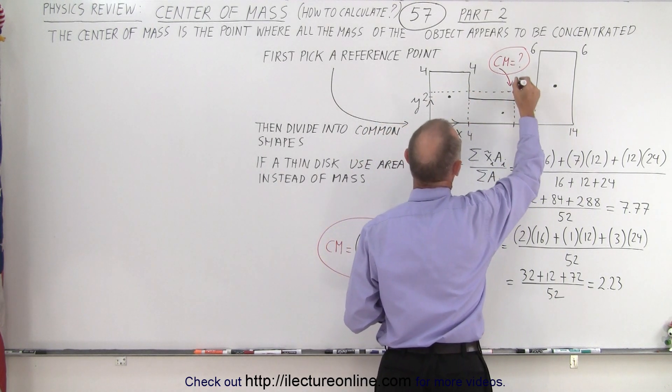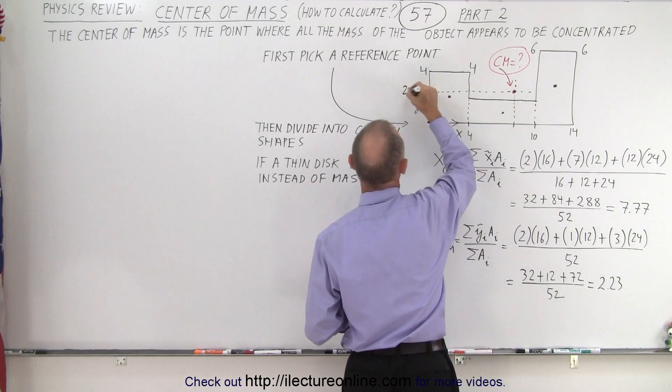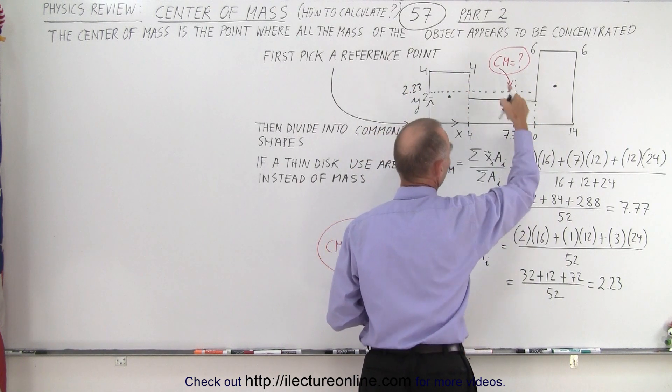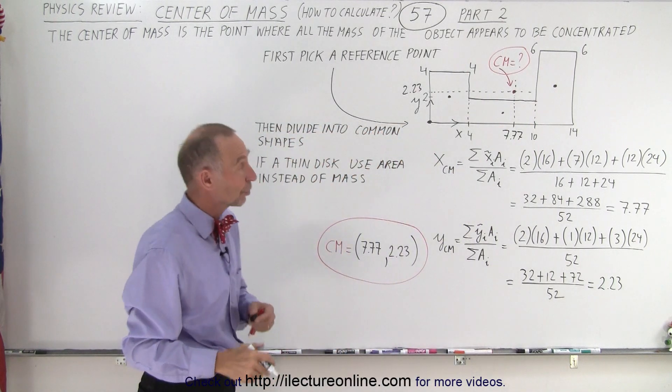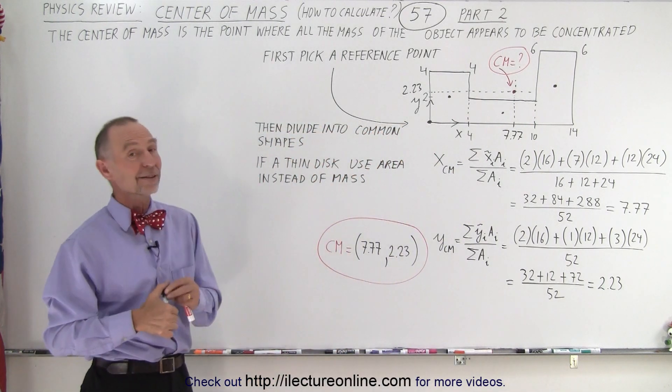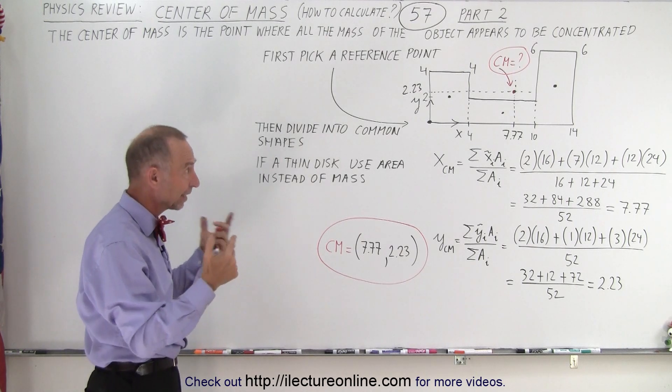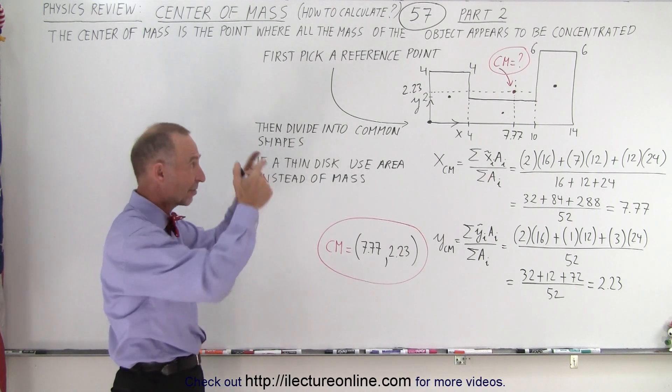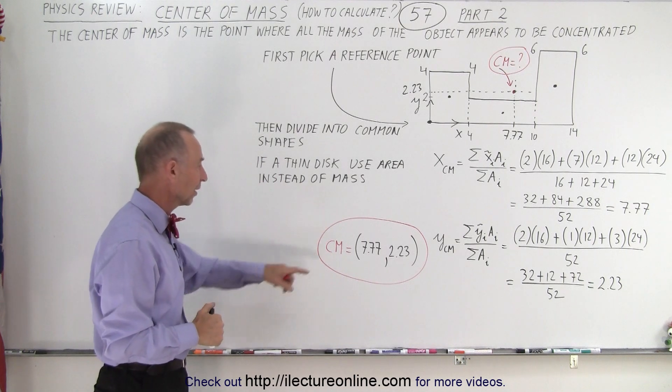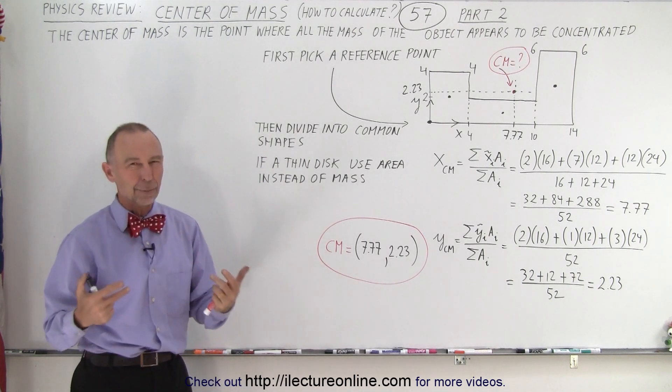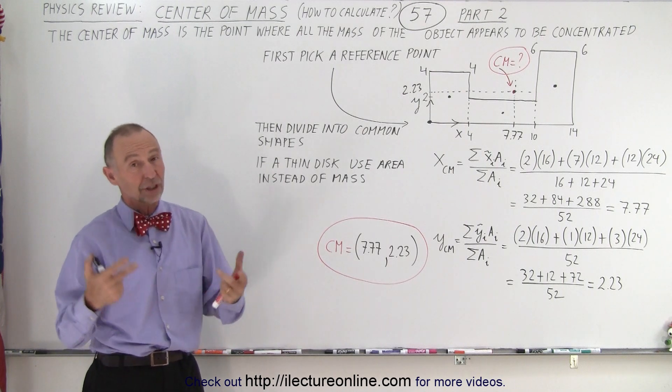And where those two lines cross, that's where you find the center of mass of the object which in this case is not actually on the object itself. So you couldn't actually balance the object at that point but it's still there. It's as if all the mass acts at that particular point. And so there you go. That's how you find the center of mass of an irregular shaped object using algebra.